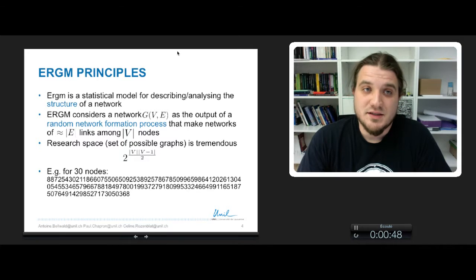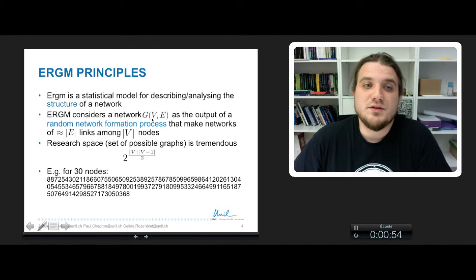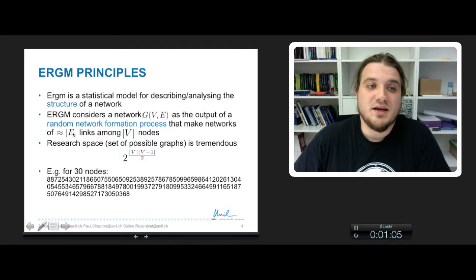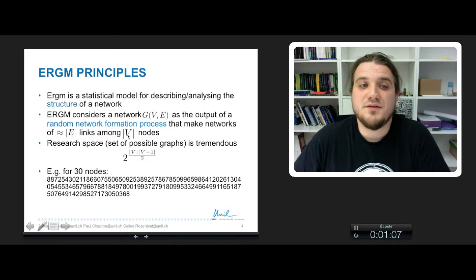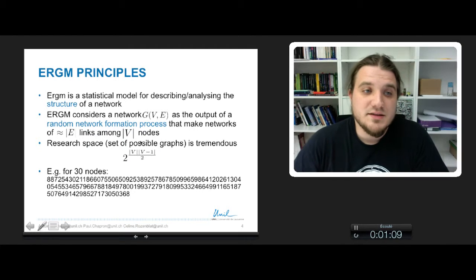So ERGM is a statistical model for describing and analyzing the structure of a network, and it considers, for a network G of vertices V and edges E, that it is the output of a random network formation process that make networks of approximately the size of E links among the size of V nodes. And in fact, this research space, so the set of all possible graphs, is tremendous.